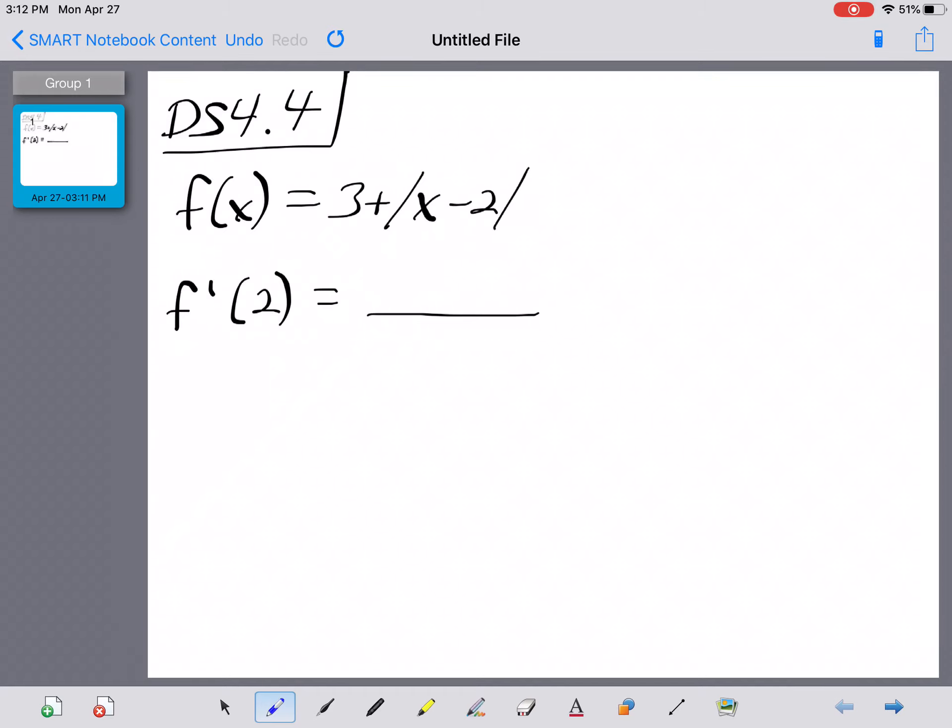All right, DNS exam number four, problem number four. They've given you a function right here, f of x is equal to 3 plus the absolute value of x minus 2, and asked you to come up with the value, the numerical value, of f prime of 2.